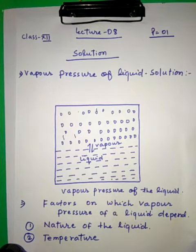You can say in other words, the pressure exerted by the vapor above the liquid surface in equilibrium with the liquid at a given temperature is called vapor pressure.